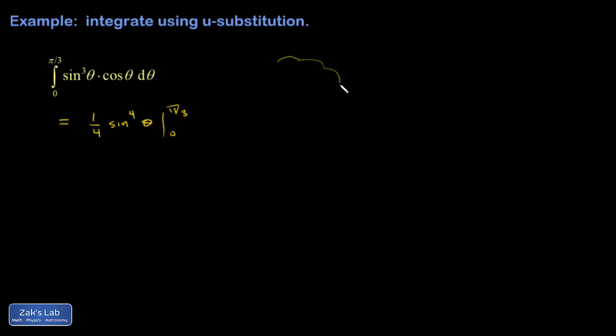So just over here in a thought bubble, I can check. I want to differentiate this one-fourth sine to the fourth theta. So I would differentiate the sine to the fourth with respect to sine theta, and that gives me four sine cubed. And then the chain rule says you have to differentiate sine theta with respect to theta, which is cosine theta.